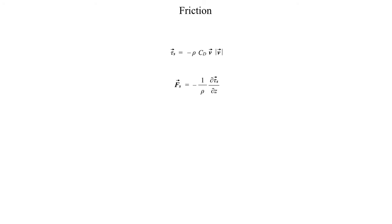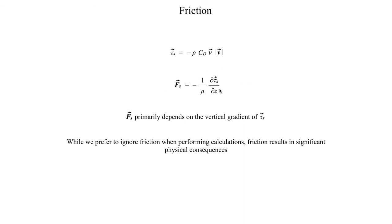Another parameter we use is F_s, defined as minus one over ρ times the change in our shear stress parameter with height. This primarily depends on the vertical gradient of the shear stress parameter and is used to assess how much friction is contributed by turbulent eddies. If the shear stress parameter changes very rapidly with height, we get more friction from F_s. Above the boundary layer, this basically goes to zero because the shear stress parameter changes very little with height. But close to the ground, the shear stress parameter changes very rapidly, so you get a lot of friction due to turbulent eddies in the boundary layer.